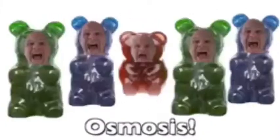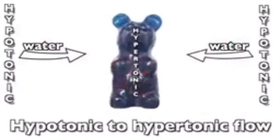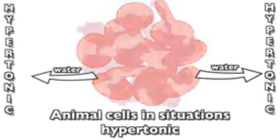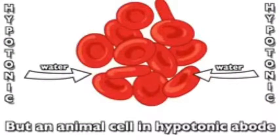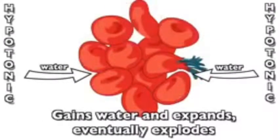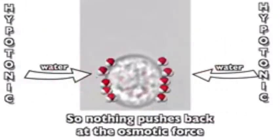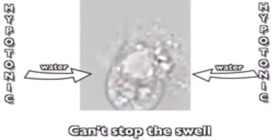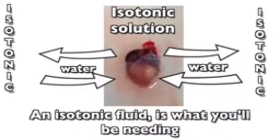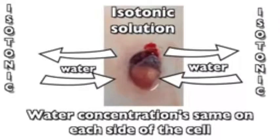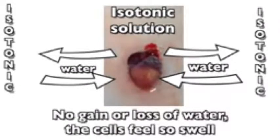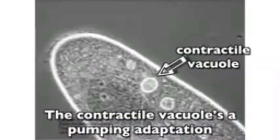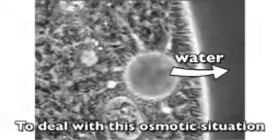Animal cells in hypertonic situations lose their water, shrink and shrivel. But an animal cell in a hypotonic environment gains water and eventually explodes, because animal cells lack a cell wall, so nothing pushes back at the osmotic force. An isotonic fluid keeps water concentrations the same on each side of the cell — no gain or loss of water. A paramecium, which lives in ponds and lakes, constantly fights osmotic water uptake; its contractile vacuoles are a pumping adaptation to deal with this osmotic situation.